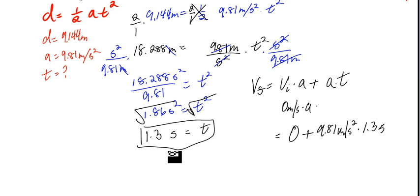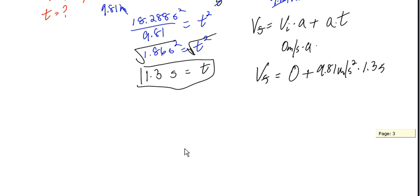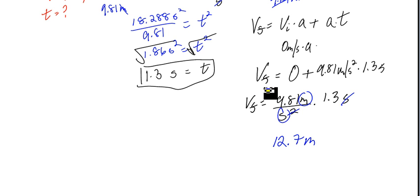I'm going to just rewrite this one more time. V of F is equal to 9.81 meters per second squared times 1.3 seconds. You notice that one of the seconds is going to cross out. So then I'm left with multiplying across. What's 9.81 times 1.3? The answer is 12.7. I'm left with meters per second, and that's my final velocity.